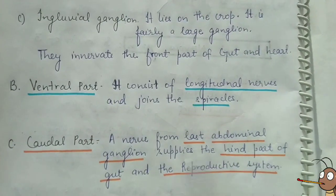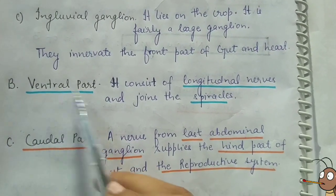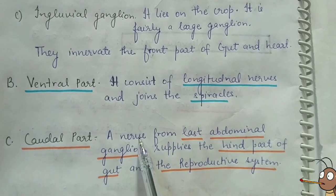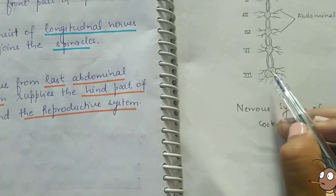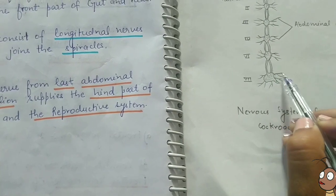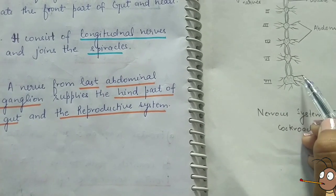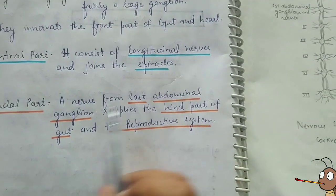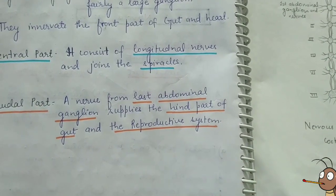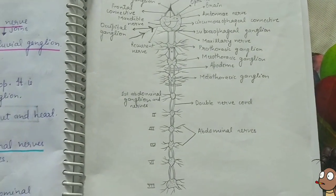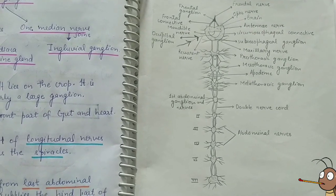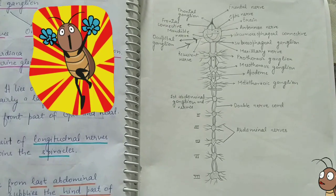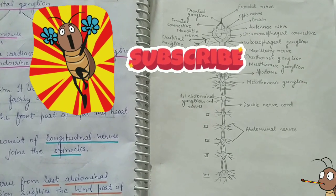The ventral part consists of longitudinal nerves and joins the spiracles. The caudal part arises from the last abdominal ganglion — the 7th abdominal ganglion — and supplies the hind part of the gut and the reproductive system. So this is the complete nervous system of the cockroach, divided into the central nervous system, peripheral nervous system, and autonomic nervous system. I hope you liked this video; please subscribe, like, share, and comment.